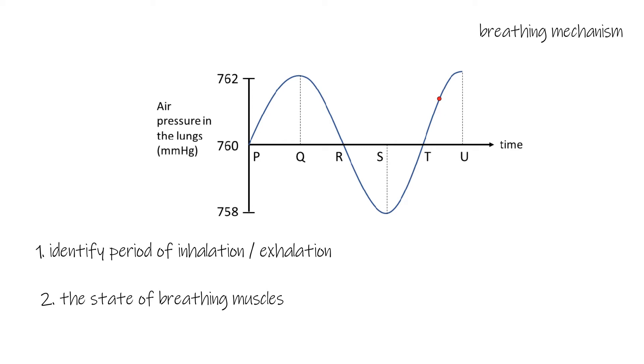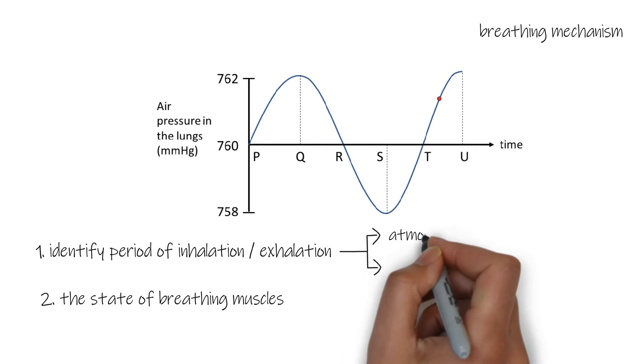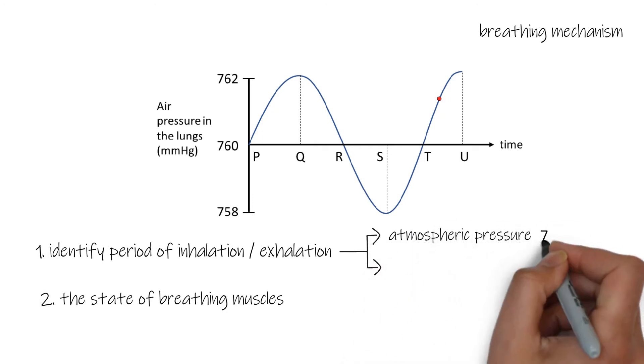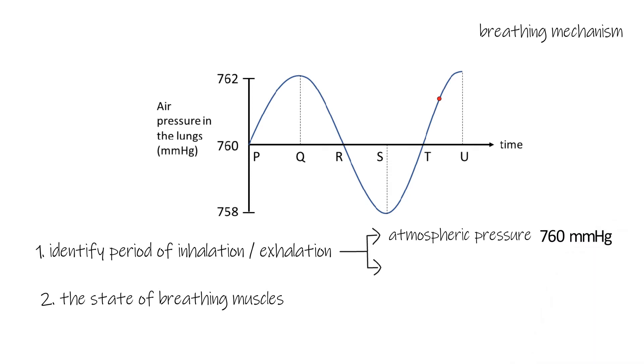In order to identify the period of inhalation or exhalation, you must understand two things. First, the atmospheric pressure is 760 mmHg. Second, air flows from high-pressure region to low-pressure region.